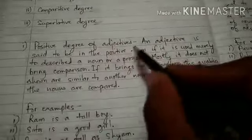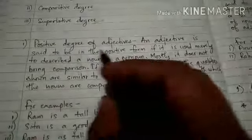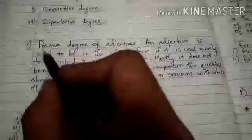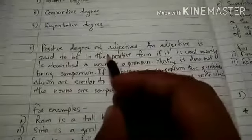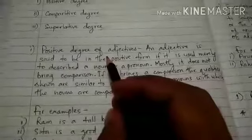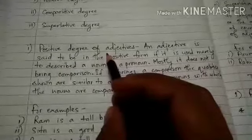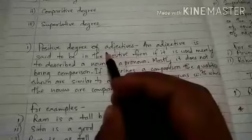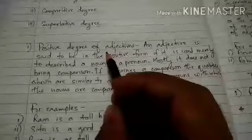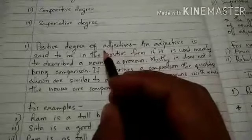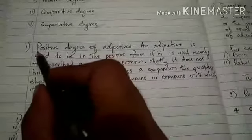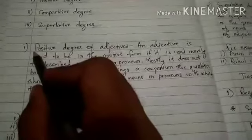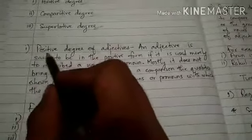The first degree of comparison is positive degree of adjectives. What do we mean by positive degree of adjectives? We all know that adjectives are words that qualify or describe nouns and pronouns by showing their qualities, quantities, numbers, shapes, and sizes. So here, how do we identify if the adjective used is in positive form? We will know an adjective is in positive form if it is used merely to describe a noun or a pronoun.